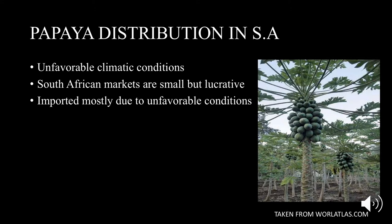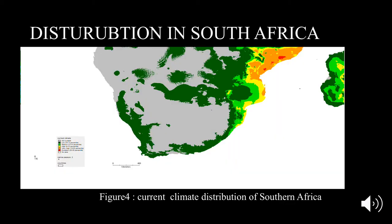I will now focus more on the distribution of papayas in South Africa. Papaya distribution is poor in South Africa due to unfavourable climatic conditions. South African markets are small, however they are still lucrative. Many of our papayas are imported, also due to the unfavourable conditions. Figure 4 represents the current climate distribution of South Africa. Referring to the legend on the left, we can see that there is poor climate suitability for papayas.